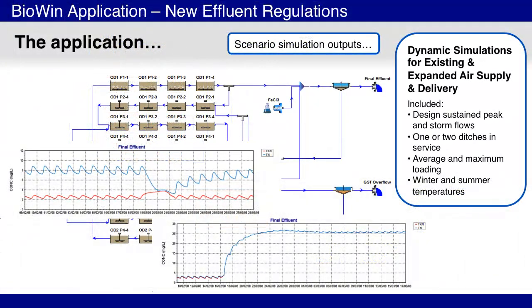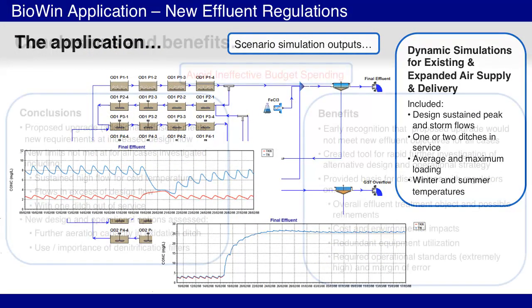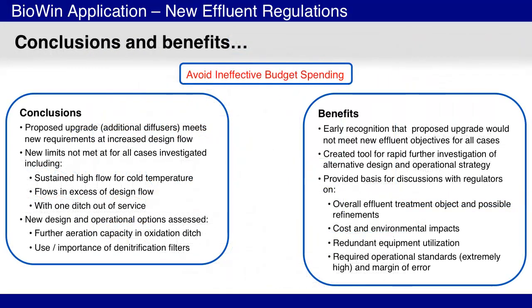Biowin was used to generate charts to illustrate potential responses of interest to the plant owner. The model results helped to emphasize a number of important conclusions, including that the proposed upgrade of including diffusers in a portion of the fourth pass would allow the plant to meet the new effluent requirements at design flow, but that the proposed upgrade would not be able to meet the new effluent requirements under all conditions, such as sustained peak flow events at cold temperatures and with one oxidation ditch out of service.